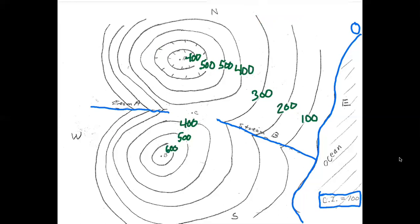From here you can label more contour lines if you want — for example, this one looping around is 100, and this is 200. You can put as much or as little labeling as you want.